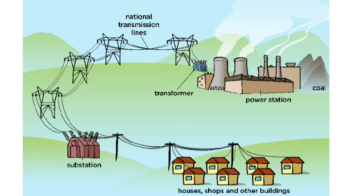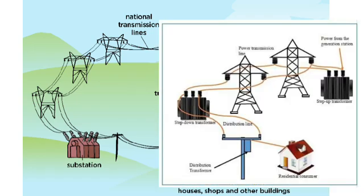The transmission line carries electricity over long distances from the generating facility to the area of demand. Transmission lines transmit at a voltage of over 200 kV to maximize efficiency.